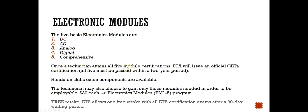Once the technician attains all five module certifications, ETA will issue an official CET certification. Hands-on skill exam components are available if you would like to take them. The technician may also choose to gain only those modules needed in order to be employed. The price for each module is $30. On the ETA website, look for the electronics modules program where you can pick any module you want.